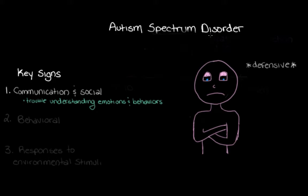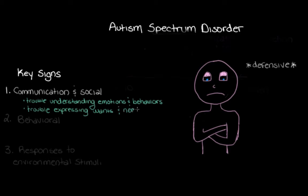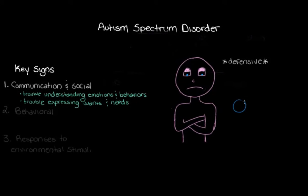Keep in mind that Autism Spectrum Disorder is a spectrum, so people might have different degrees of trouble understanding the behaviors of others — maybe a little, maybe a lot. If someone with ASD doesn't read the emotions and behaviors of others in the same way, this can make it tricky to communicate. Young children might grab or scream because they don't have another way to express what they need. Older kids may struggle to connect with others or prefer to hang out on their own.